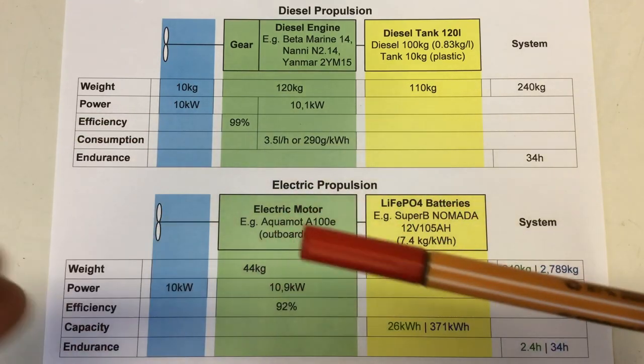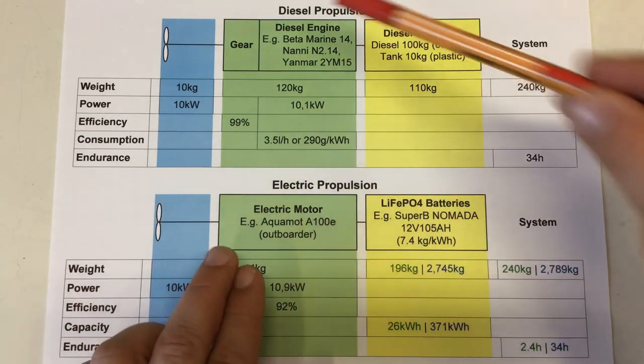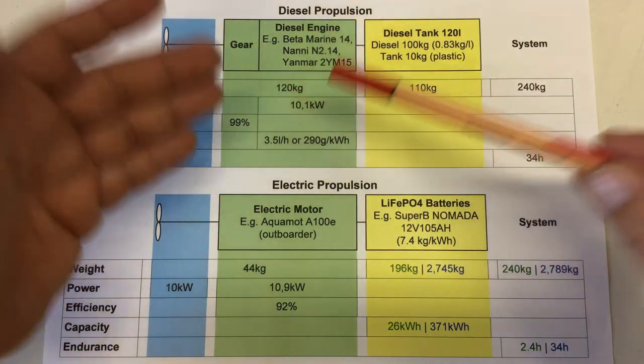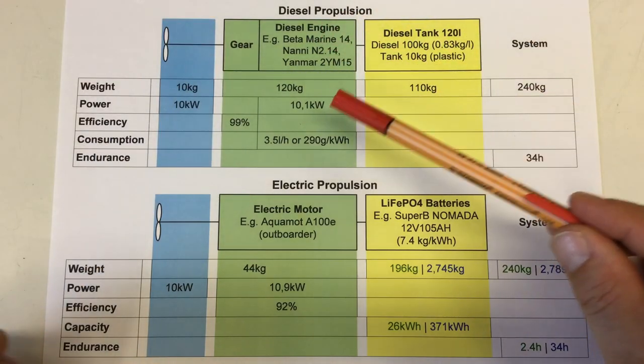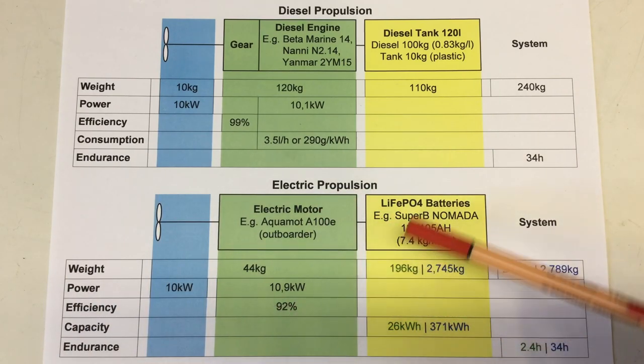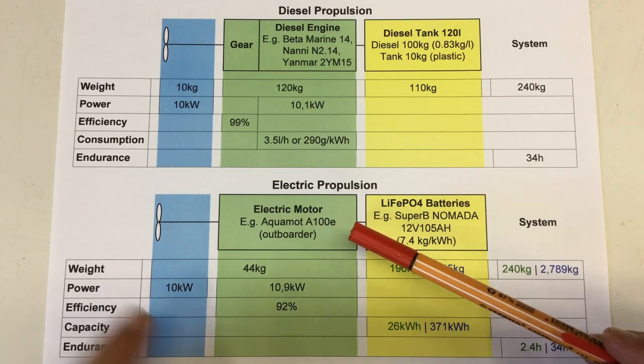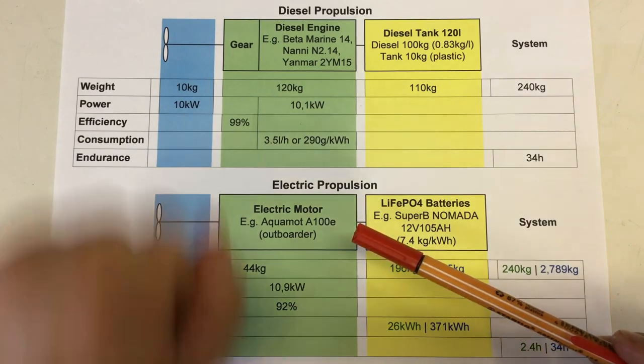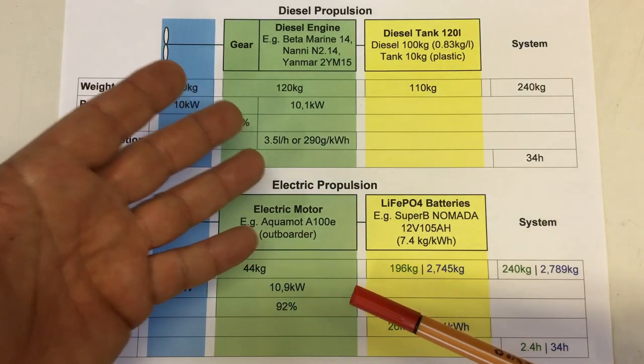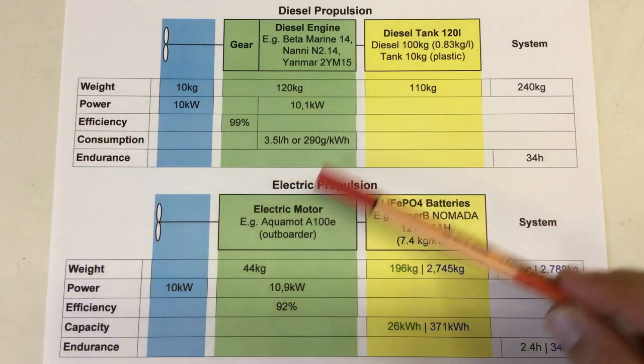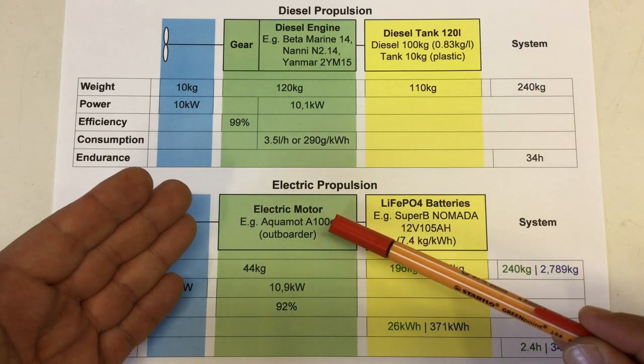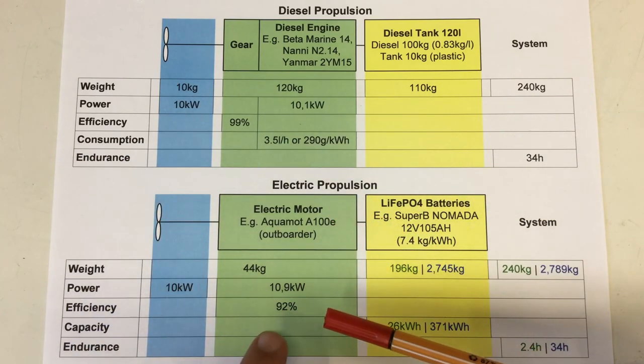The electric motor I'm using in this example is the Aquamod A100E, an outboarder with the shaft and prop integrated, so we have a slight weight advantage. That motor needs 10.9 kilowatts input power to produce 10 kilowatts at the prop, so it has an efficiency of 92%. Remember, the bigger the motors, the higher the efficiency. Very large electric motors can have efficiencies up to 98%.